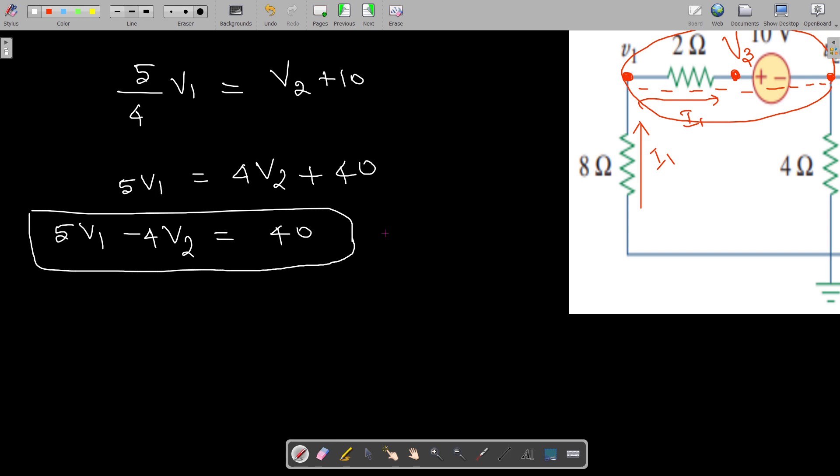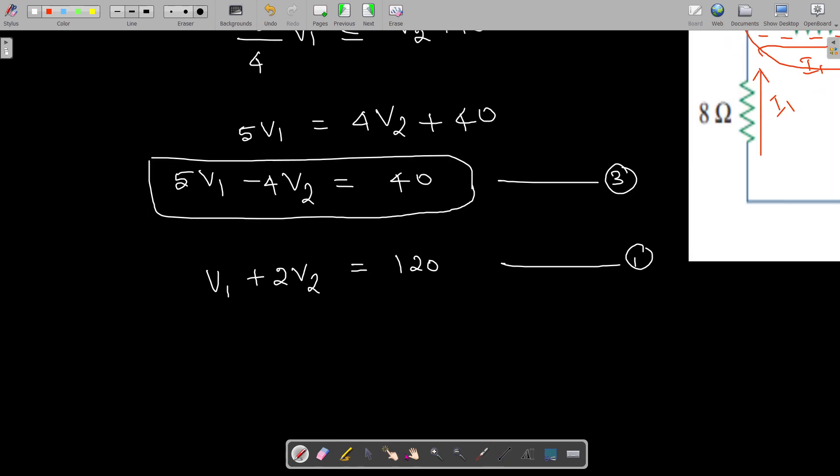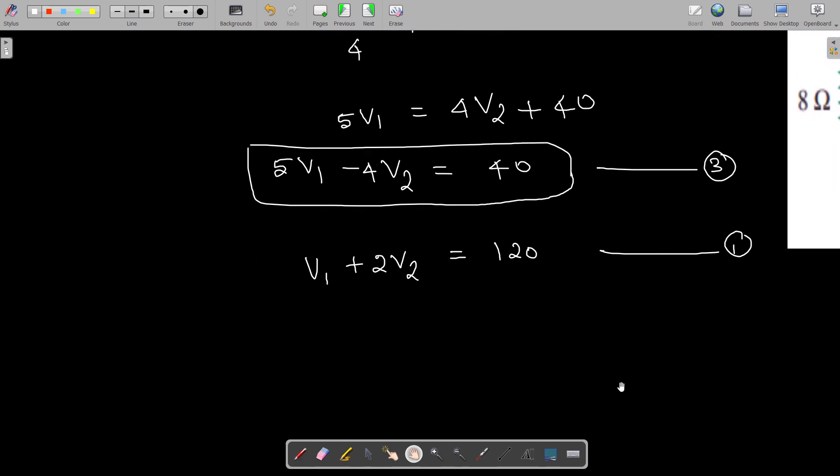Already we have this equation as equation number one. If I multiply this first equation by 2: 2v1 + 4v2 = 240. So this is my modified version of the first equation. The equation number three is 5v1 - 4v2 = 40.